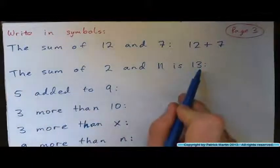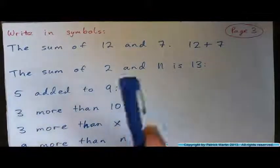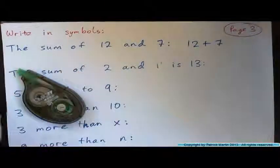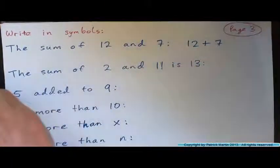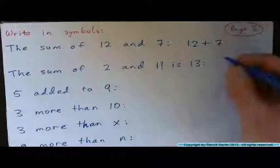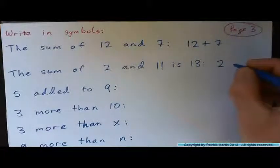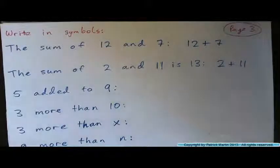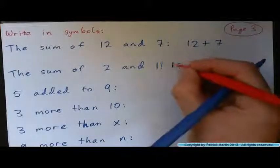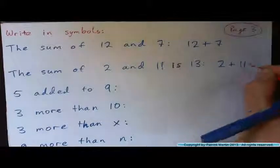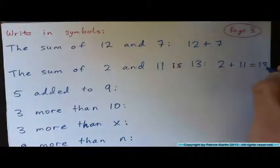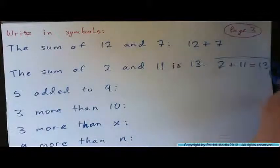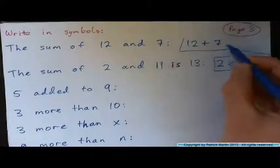How about the sum of two and eleven is thirteen. How would you write that with symbols? The sum of two and eleven is thirteen. Two plus eleven, and how do we represent is? Equals, right? Equals thirteen. So the answer is two plus eleven equals thirteen. This one was just twelve plus seven.